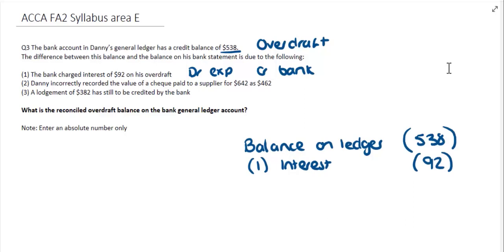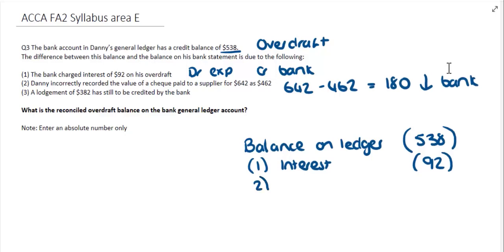The next difference is that Danny incorrectly recorded the value of a check paid to a supplier for $642 as $462. The difference of $180 needs to be adjusted in the ledger. The amount recorded was $462, which was lower than what it should have been. Paying a check out of the bank account reduces the overall bank balance, so if we adjust it to $642, that difference is going to be a further cost in the bank balance and will once again reduce the bank account balance. So I'm going to take $180 off the overall balance.